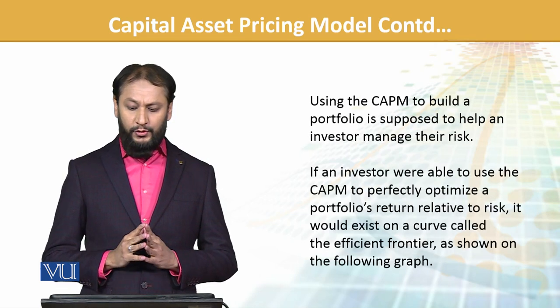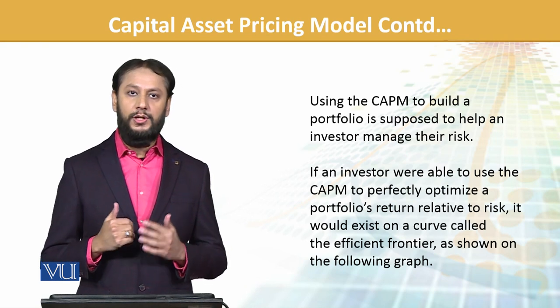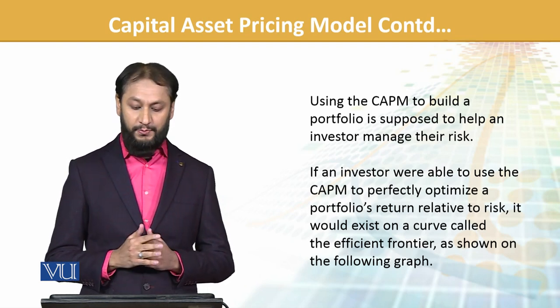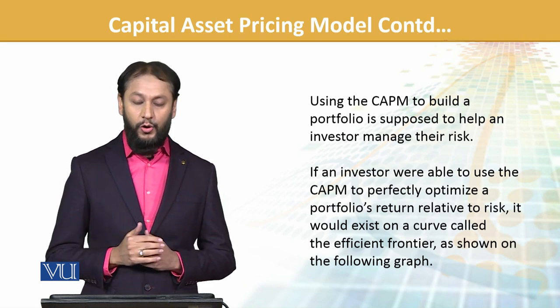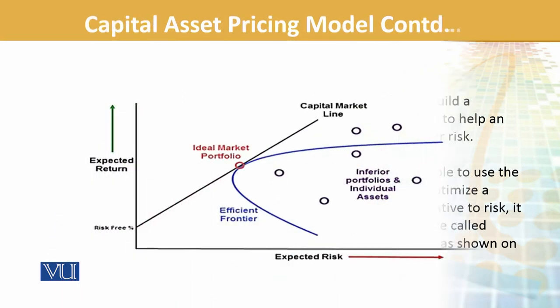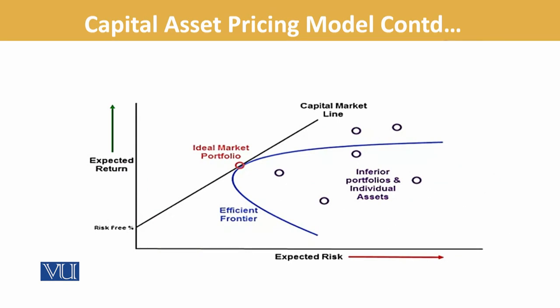Using CAPM to build a portfolio is supposed to help investors manage their risk. According to how much risk they want to take, its application helps them optimize. If an investor is able to use CAPM to perfectly optimize a portfolio's return-to-risk ratio, it will exist on a curve called the efficient frontier. Graphically, this reflects what CAPM shows us — including the capital market line (CML), which we've seen before. From a calculation point of view, this is the ideal portfolio — the one giving the highest level of return given the expected risk we are going to take.